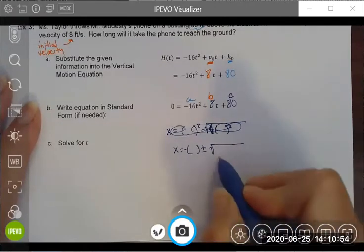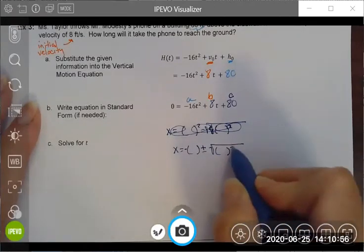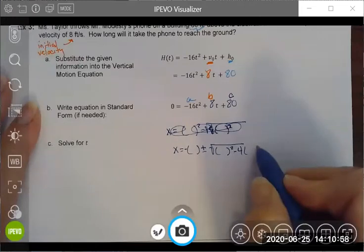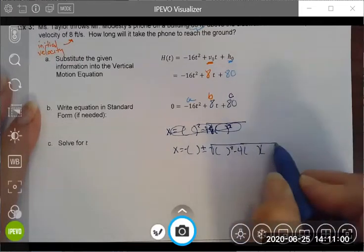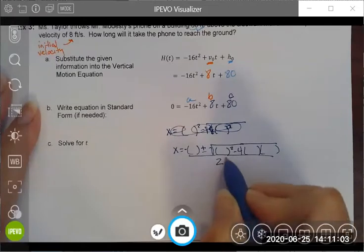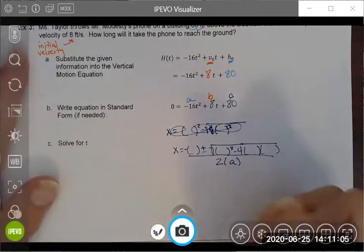And I'll put a number there instead of a variable. I am a spaz, that's certifiable. Negative 16. Okay, so my a is negative 16. I'm going to substitute that here as well.